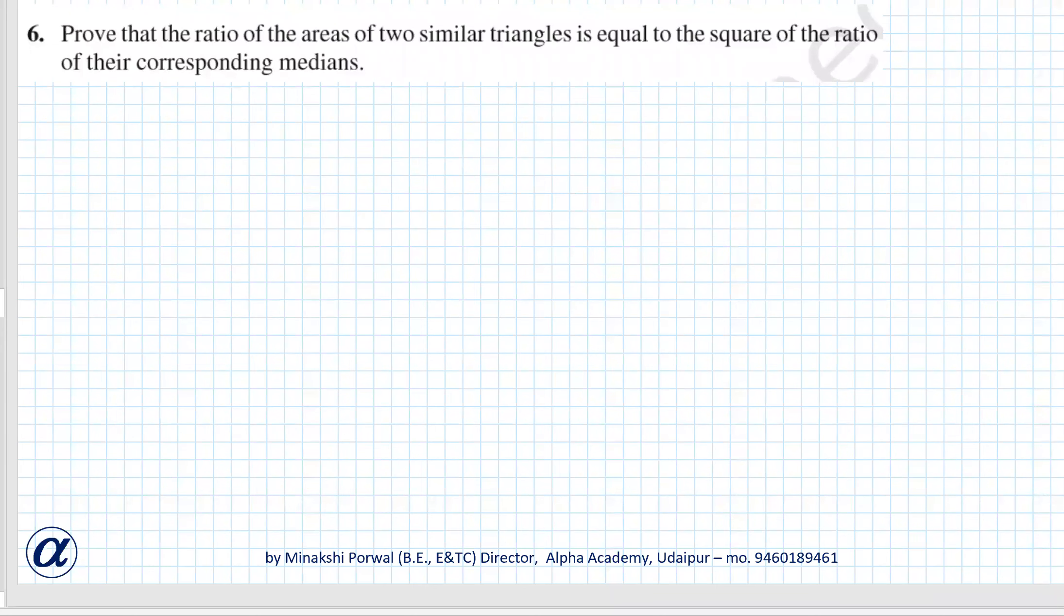Exercise 6.4, question number 6: Prove that the ratio of areas of two similar triangles is equal to the square of the ratio of their corresponding medians. It is given that there are two triangles which are similar, and the area ratio is equal to the square of their corresponding medians.